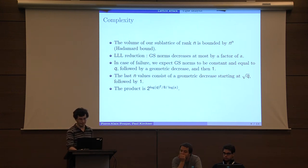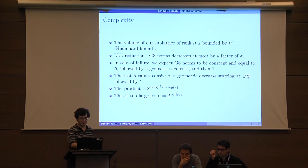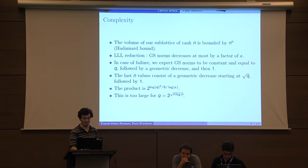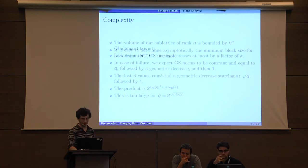Therefore, the last N values, which are the smallest, consist of a geometric decrease starting at square root of Q followed by some 1s. It's very simple to compute the product using this formula, but then we will remark that log Q appears in the square. This is too large for Q. It is around 2 to the square root of N, which is much smaller than what we had before.